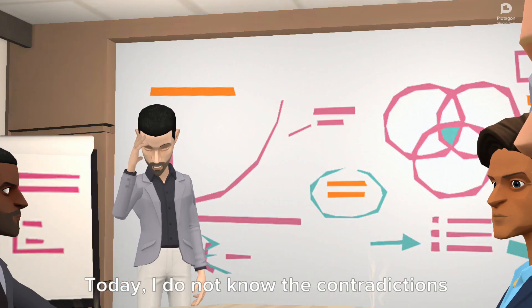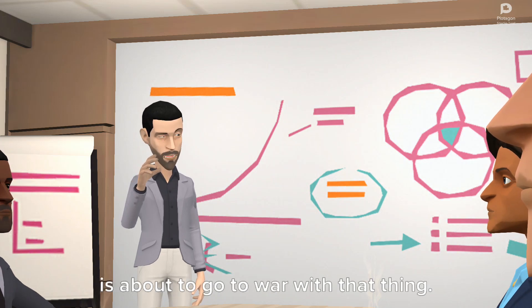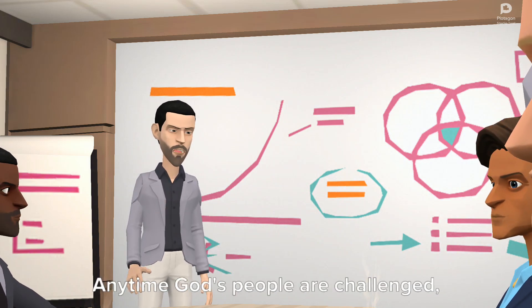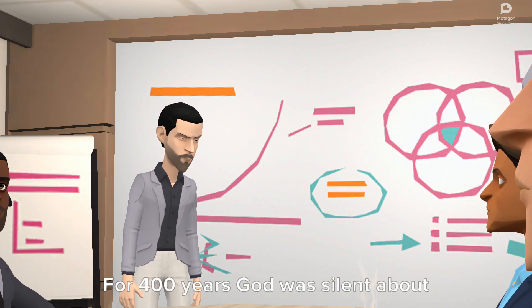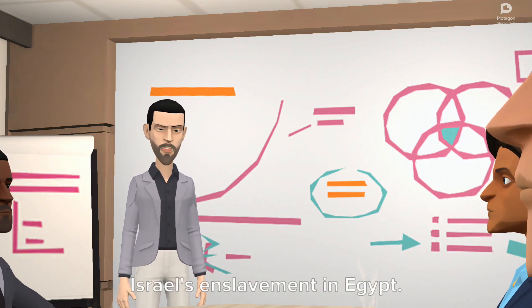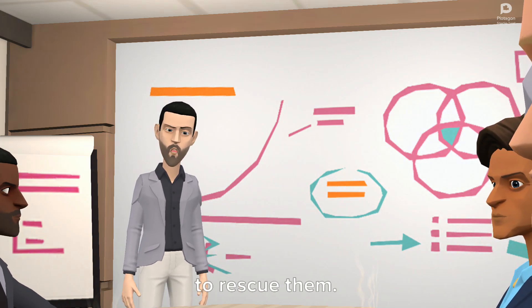Today, I do not know the contradictions and issues surrounding you. But one thing I know is that heaven is about to go to war with that thing. Anytime God's people are challenged, he goes into war to rescue them. For 400 years God was silent about Israel's enslavement in Egypt. But after this he went to war in order to rescue them.